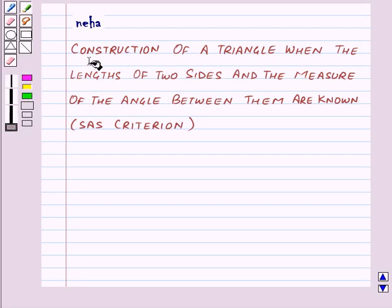Hi and welcome to the session. Today we will learn construction of a triangle when the lengths of two sides and the measure of the angle between them are known. That is SAS criterion.